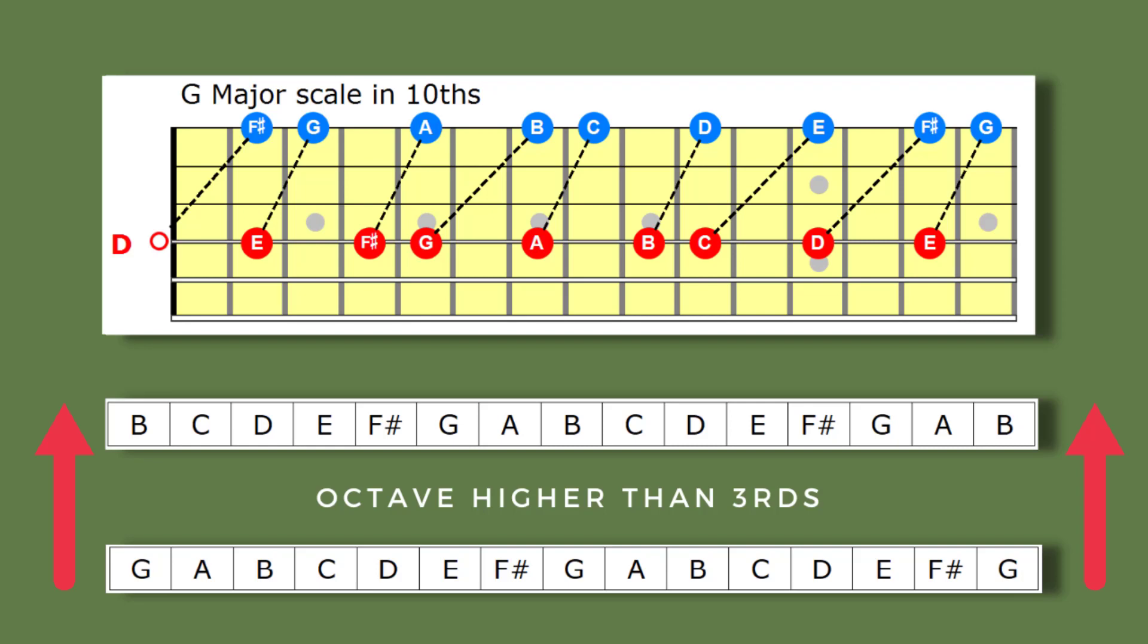So by now you're probably getting the idea that the larger the number of the interval, the more space you create in the harmony. So if you wanted to get a close or tight sound in your harmony, a third would be a good idea. On the other hand, if you wanted to create more space in your arrangement, a tenth would be a good choice.